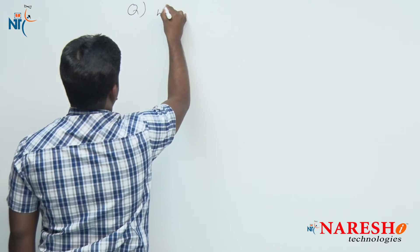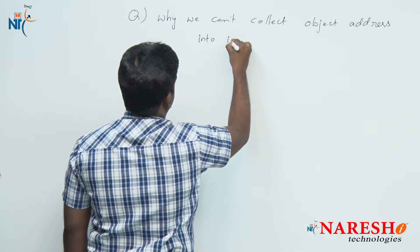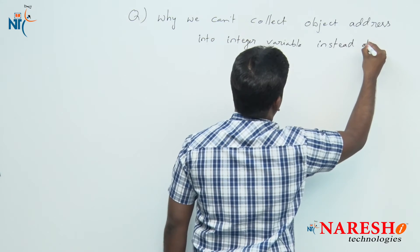Hi everyone, welcome to Nourish Technologies, this is Srin Vaz. In this session, we are going to discuss one very important topic. As soon as an object is created, the constructor returns an object reference — we know that. The question is: if an object reference is an integer, then why do we collect the object address into a class-type variable instead of an integer-type variable?